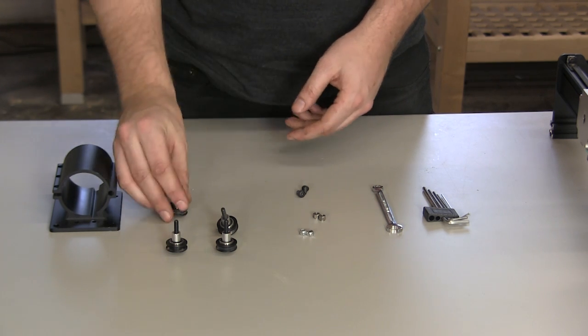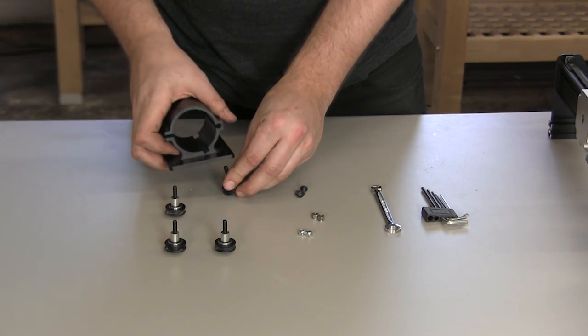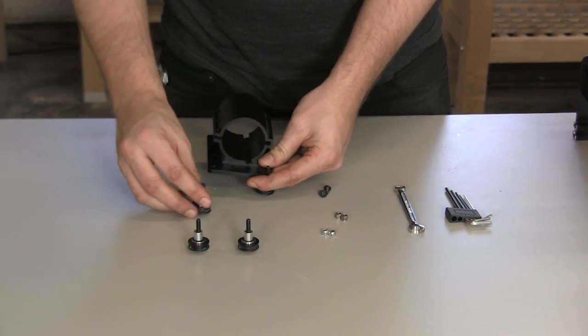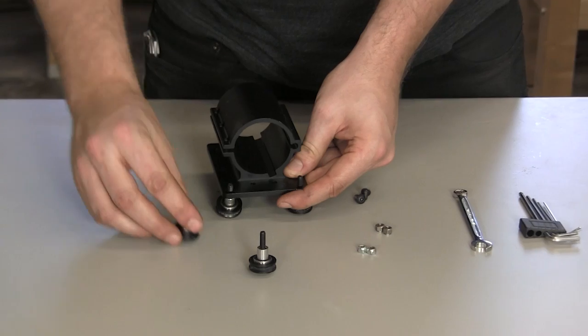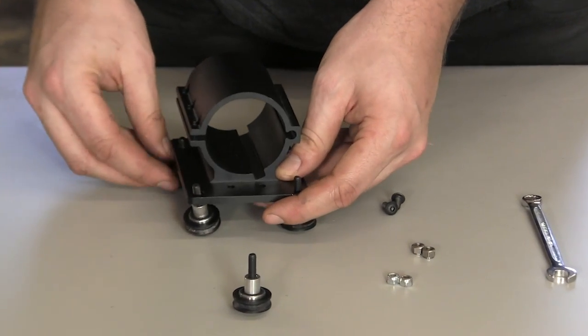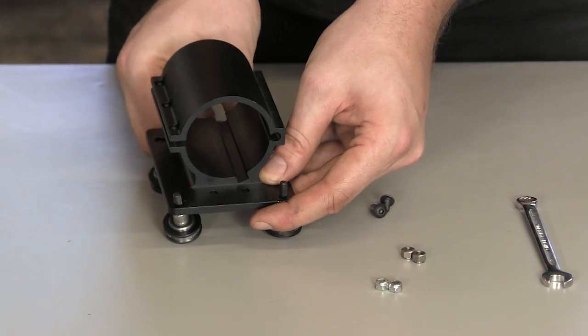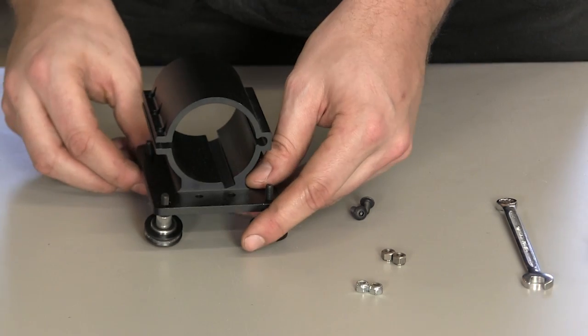Place these screws through the holes provided on the spindle mount. You'll notice there are smaller holes and larger holes. The smaller holes are for V-wheels with nylock hex nuts and the larger holes are for V-wheels with eccentric nuts.